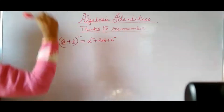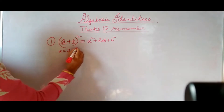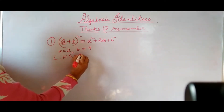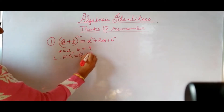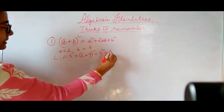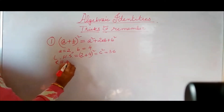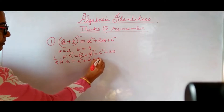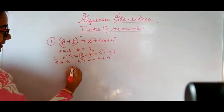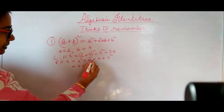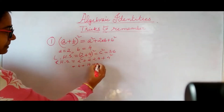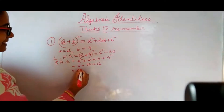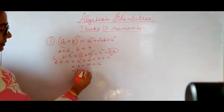Then after that I will tell you how to remember the formula. Suppose A is equal to 2 and B is equal to 4. Now left hand side: we substitute 2 plus 4 whole square. So 2 plus 4 is 6, and 6 square is equal to 36. Then right hand side: A square — so 2 square plus 2 into 2 into 4 plus 4 square. So 2 square is 4, plus 2×2×4 is 16, plus 4 square is 16. So 16 plus 16 is 32, plus 4 is equal to 36. You have seen that the left hand side value equals the right hand side value.